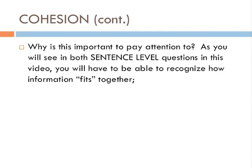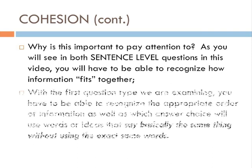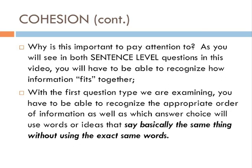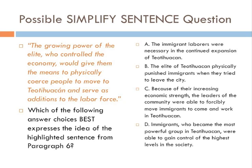Why is this important? In both of the sentence level questions in this video, you'll have to be able to recognize how this information fits together. With the first question type, you'll have to recognize the appropriate order of information, as well as which answer choice uses words or ideas that say basically the same thing without using the exact same words. This is a question I've created — a possible simplified sentence question you could see on the test. I've taken a particular sentence from paragraph six: "The growing power of the elite, who control the economy, would give them the means to physically coerce people to move to Teotihuacan and serve as additions to the labor force." The question asks: which of the following answer choices best expresses the idea of the highlighted sentence from paragraph six? There are four answer choices listed.